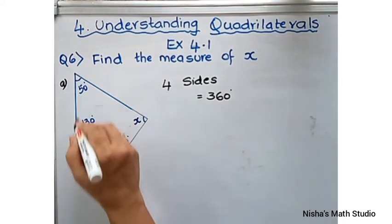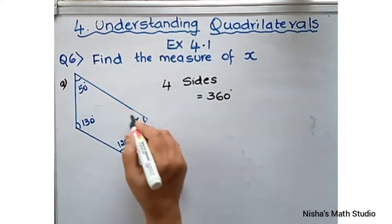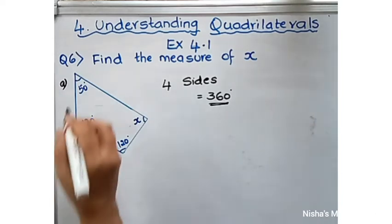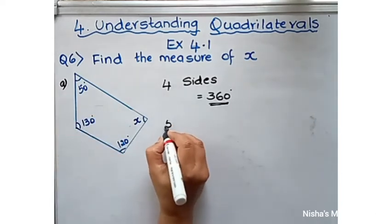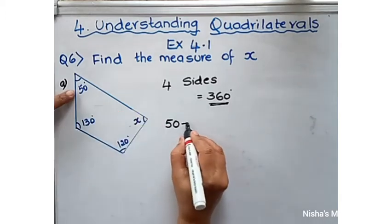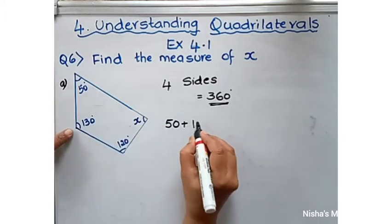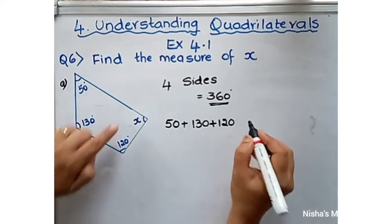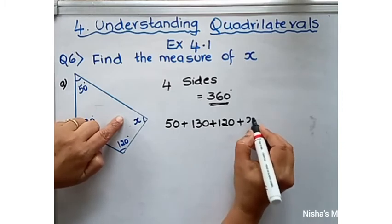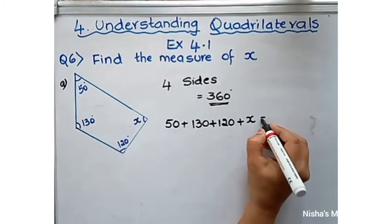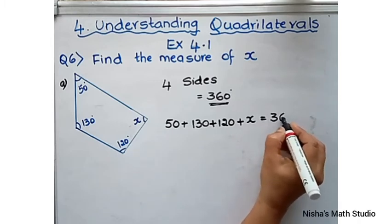So, the angles I know are 50, 130, and 120. The fourth angle is unknown, represented as x. When I add all four angles, I must get a total of 360.